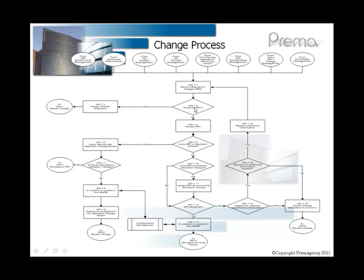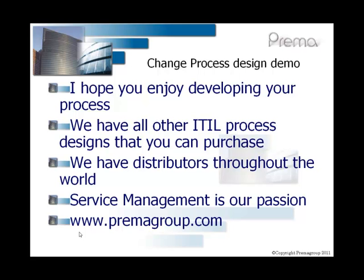As we go through our document we will be expanding on each of these sub-processes. This particular Visio is for 300.1. As you can see at the top layer, these are all the inputs to the change management process, going into the receiving of the request for change form. 300.1.2 is checking to see whether it is a duplicate RFC. For each particular sub-process part you will have a table like this, and in the top left-hand corner you will see the label — for example, 300.1.2 duplicate RFC.